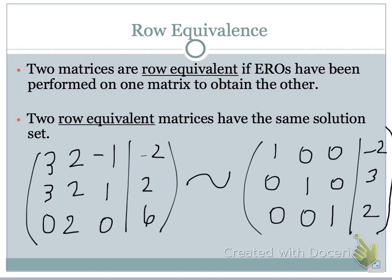So, we can actually apply several EROs to one matrix. This doesn't have to be one. We can do several steps to get to a new matrix. And when we do this, we say that two matrices are row equivalent if the EROs have been performed on one matrix to obtain the other. We use this here, a tilde, to say that these two matrices are equivalent to each other. So, two row equivalent matrices now have the same solution.